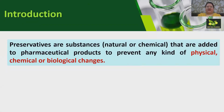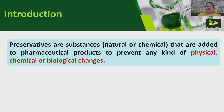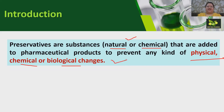First of all, we will be discussing what are preservatives and how they can be defined. Preservatives are substances that are added to pharmaceutical products to prevent any kind of physical, chemical, or biological changes. Preservatives could be natural or chemical — they are not only used in pharmaceuticals but also in food products, where they prevent all types of physical, chemical, as well as biological changes.